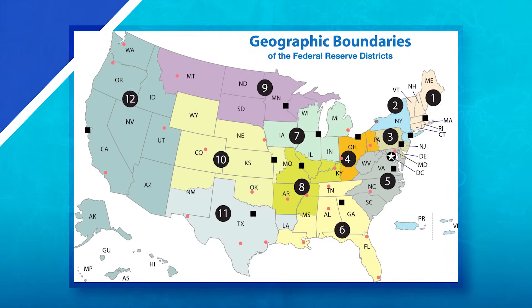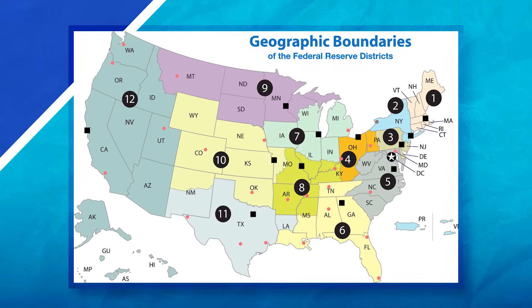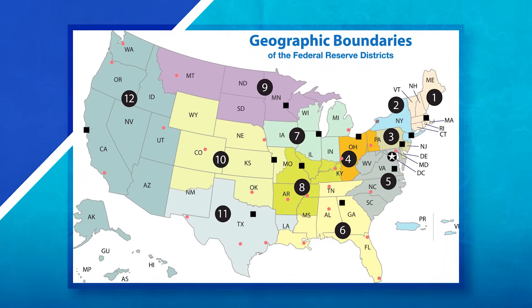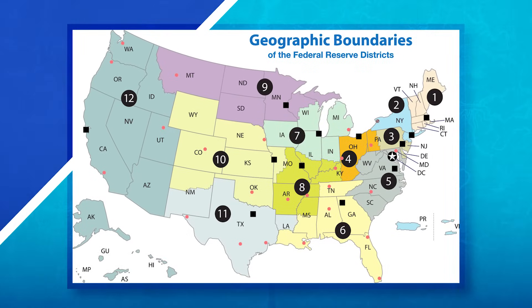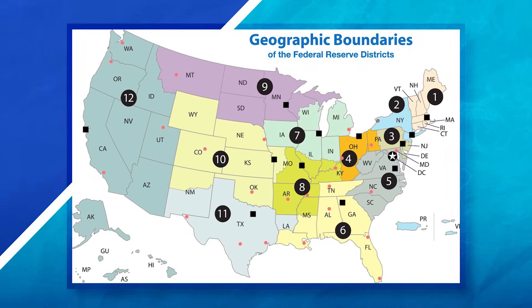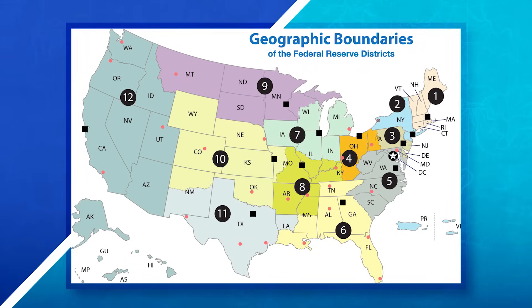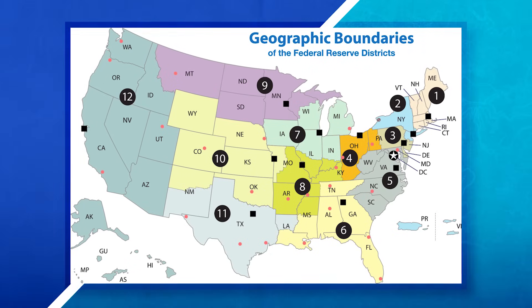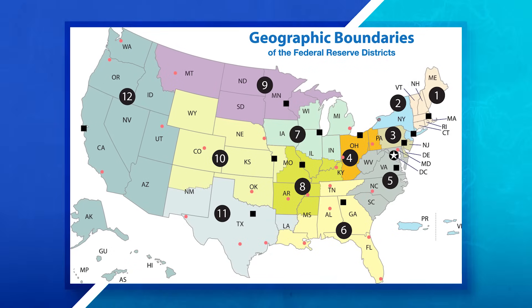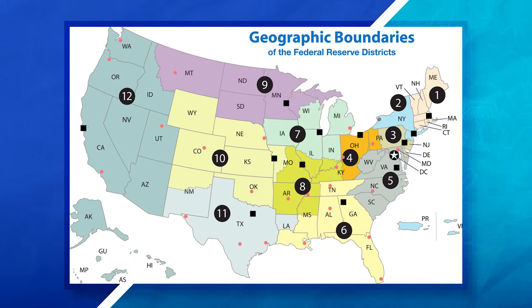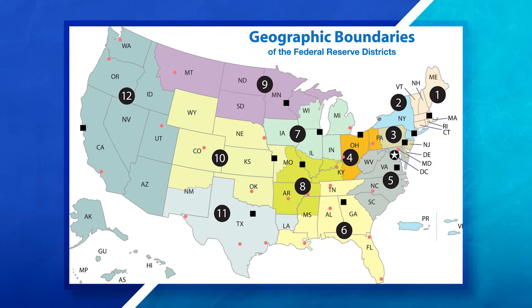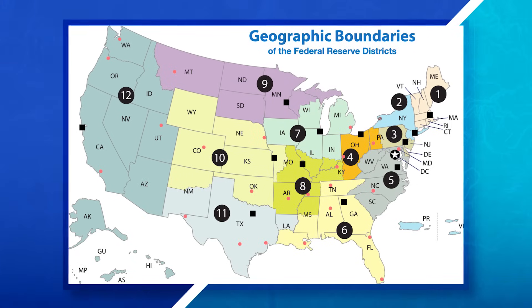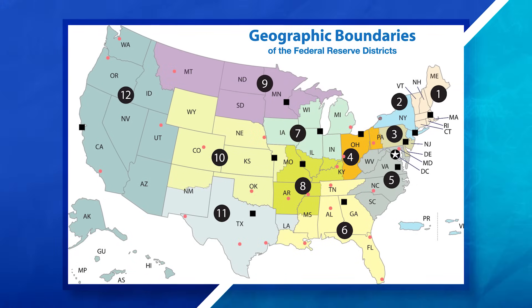For this last map, we're looking at the United States, which is again a national scale map. But this time we can see we are looking at the Federal Reserve districts, which would make this a regional scale of analysis, since the information is organized into the different districts or regions of the United States.